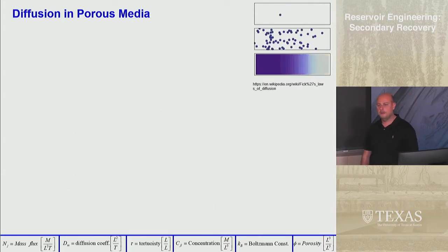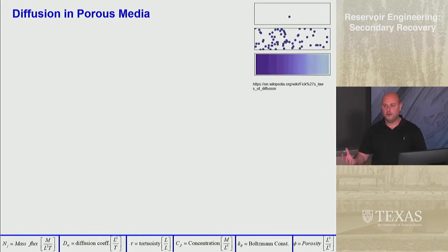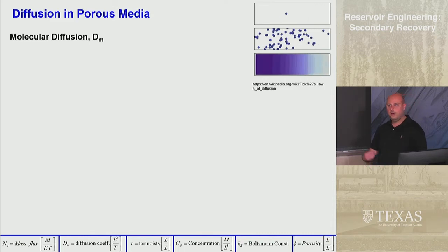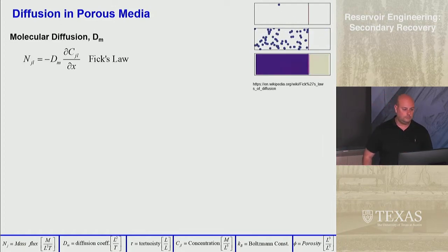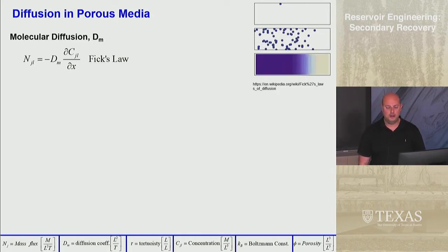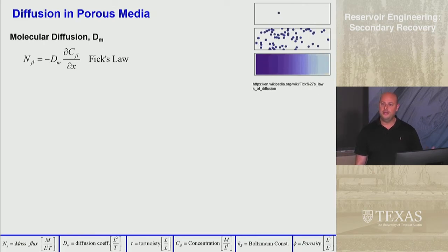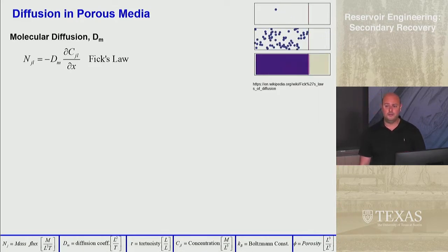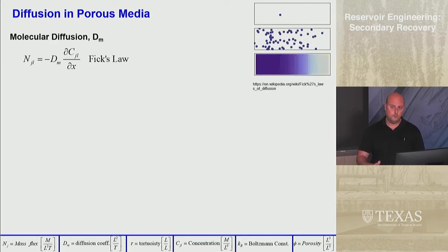Let me talk about diffusion in porous media. We often talk about molecular diffusion, and I'll use the variable D_M — that's different from dispersion. There is a law called Fick's Law that gives the amount of flux. You may know Fourier's Law (heat flux proportional to temperature gradient) and Darcy's Law (volumetric flux Q proportional to pressure gradient). Fick's Law, Fourier's Law, and Darcy's Law are all analogous.